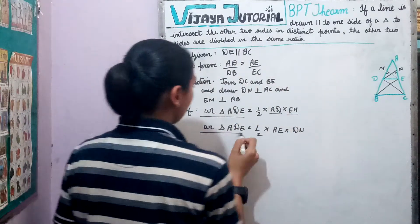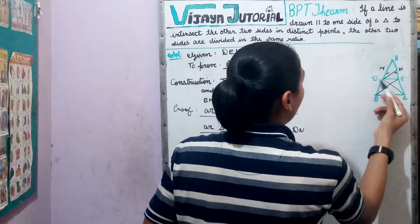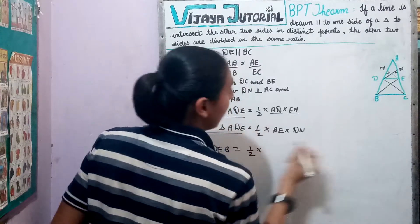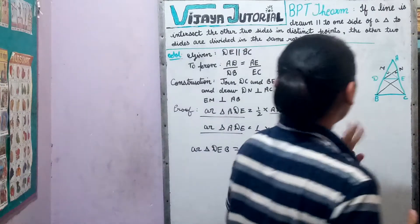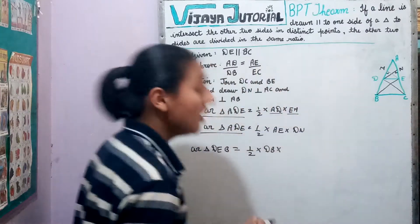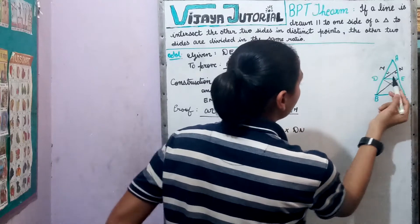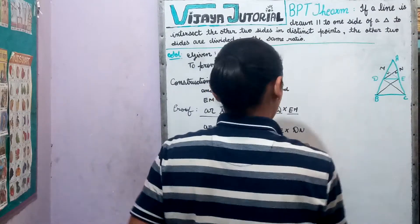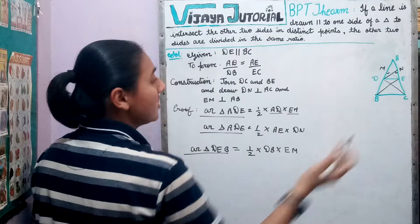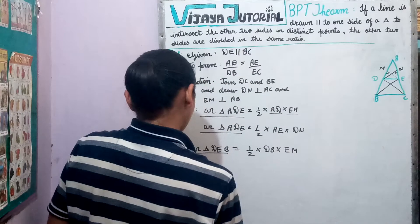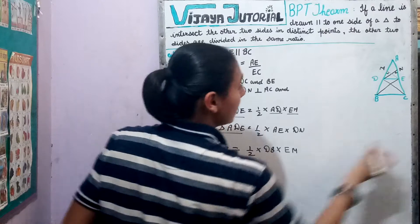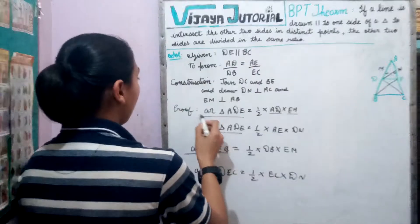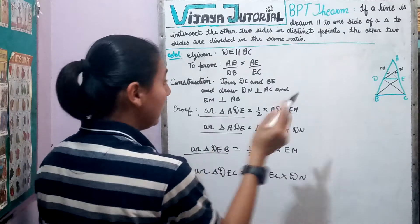Moving on to triangles DEB and DEC: area of triangle DEB equals half into DB into EM, where DB is the base and EM is the altitude. Similarly, area of triangle DEC equals half into EC into DN, where EC is the base and DN is the altitude. So we now have area expressions for triangle ADE, triangle DEB, and triangle DEC.